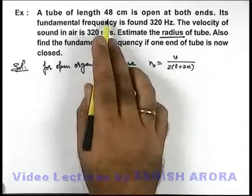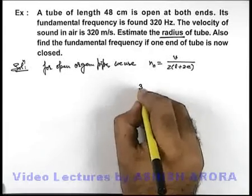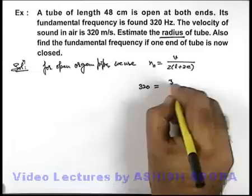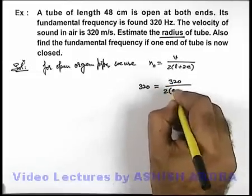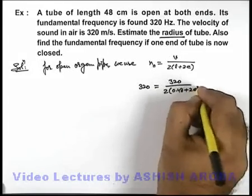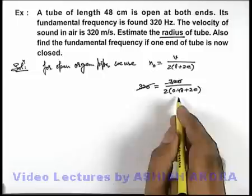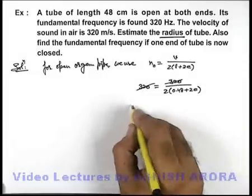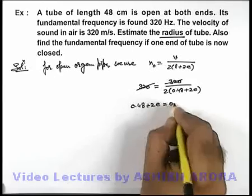The length given is 48 centimeters. In this situation, the fundamental frequency is given as 320 Hz. Speed is also 320 meters per second. This will be twice of 0.48 plus twice the end correction. Now this 320 gets cancelled out. On simplifying, you can see we are getting 0.48 plus 2e is equal to 0.5.